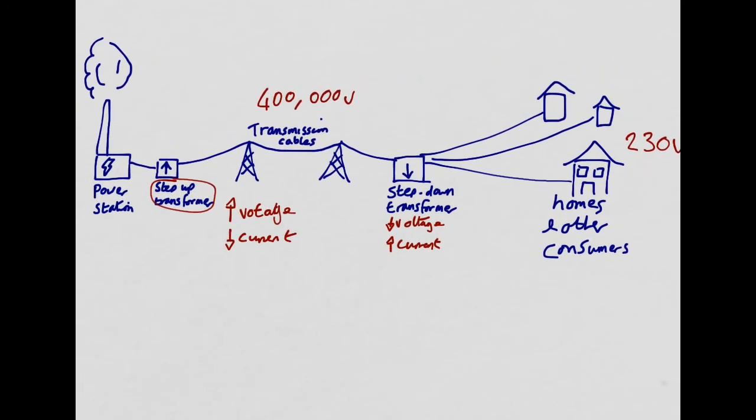Starting at the power station, going to the step-up transformer, increasing the voltage, reducing the current. That's going to mean efficient transmission, less energy wasted in the lines. We're going to then go to the step-down transformer to bring the voltage back down to usable levels, and then we're going to send it to homes and consumers.